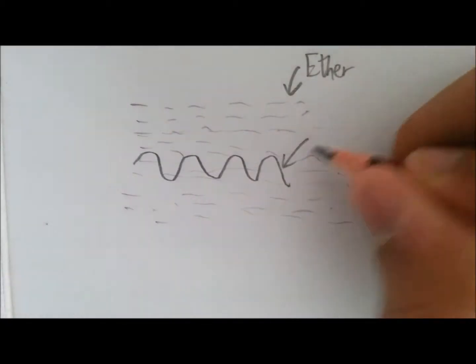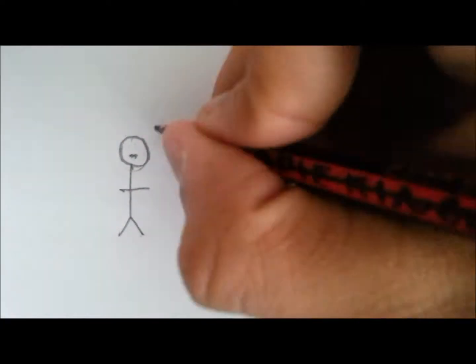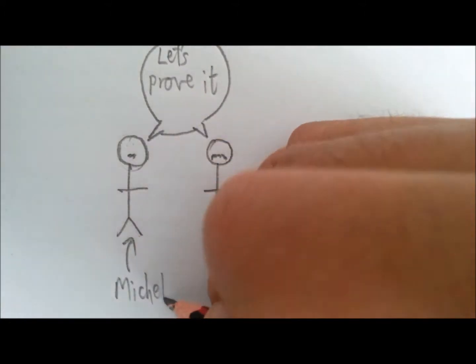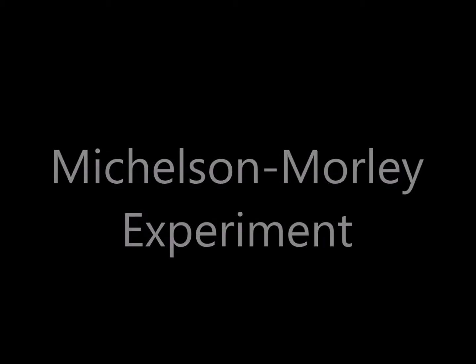The problem was that ether had not been experimentally proven, so in 1887, two men set out to prove that it existed. The two men were Albert Michelson and Edward Morley, and their experiment is known as the Michelson-Morley experiment.